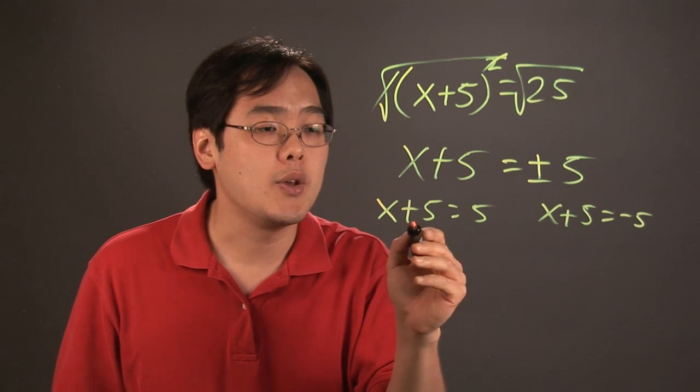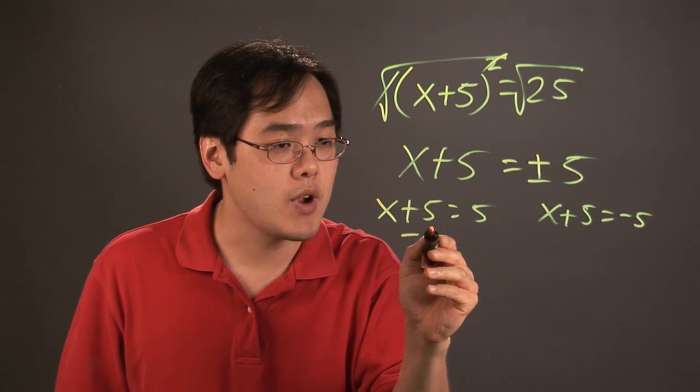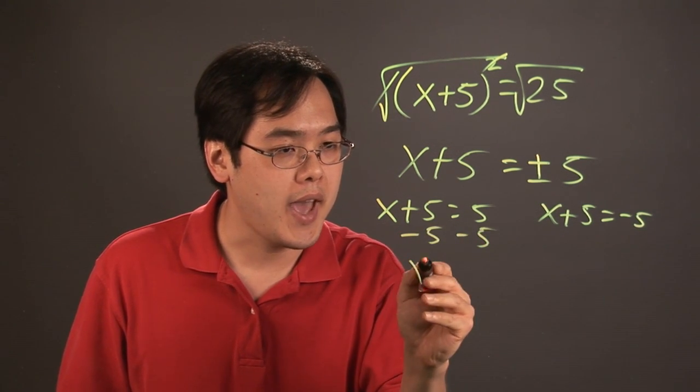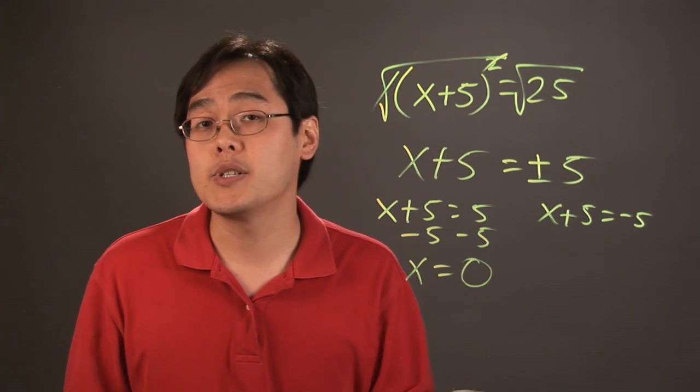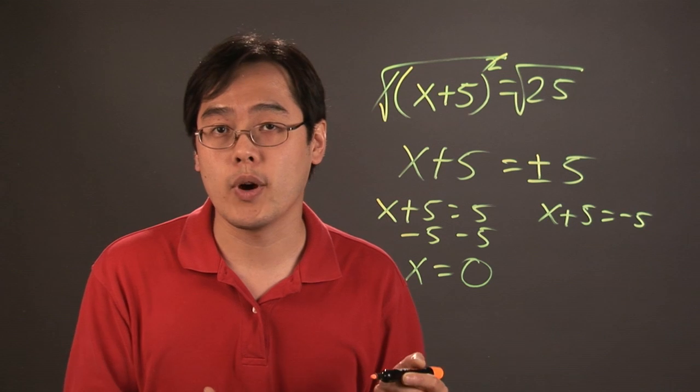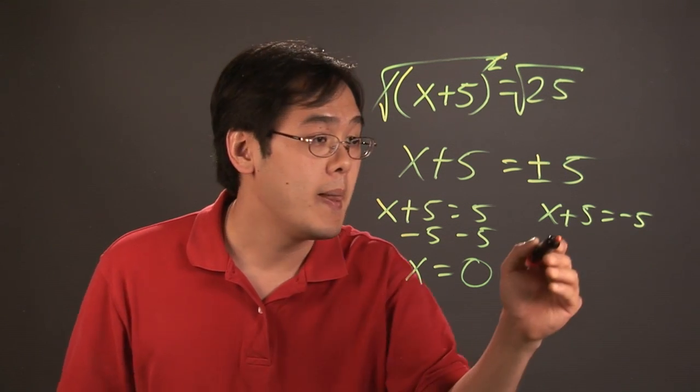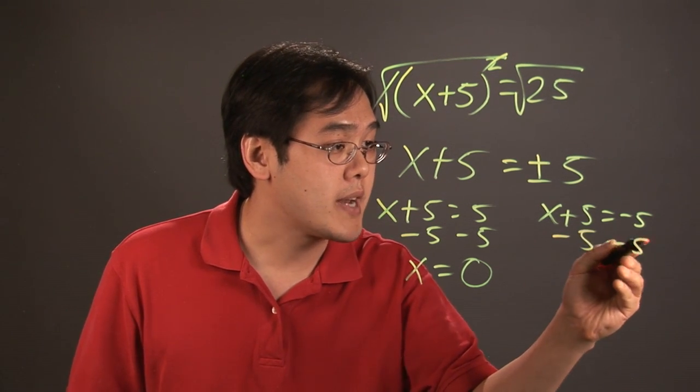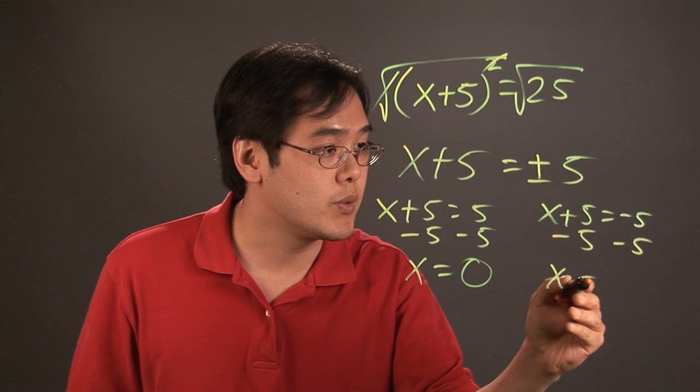Now, at this point here, you have to solve this one. You subtract 5 on both sides, you have x = 0. Now, 0 is neither positive nor negative, so that kind of answers the question right there. It doesn't always have to be positive. And here, subtracting 5 on both sides, you have x = -10.